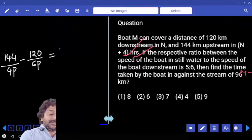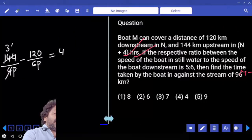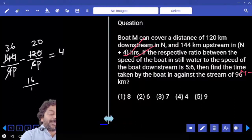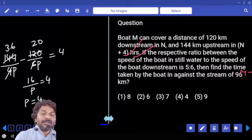4 hours. 144 by 4 is 36. 120 by 6 is 20. So 16 by P is equal to 4. From this, P is equal to 4. Now what exactly is?